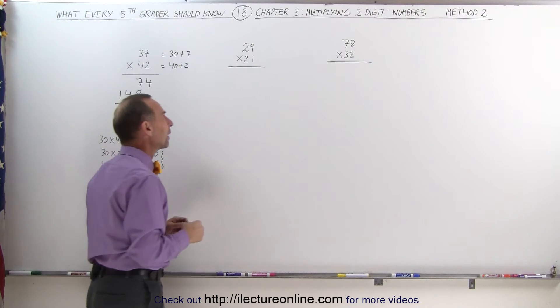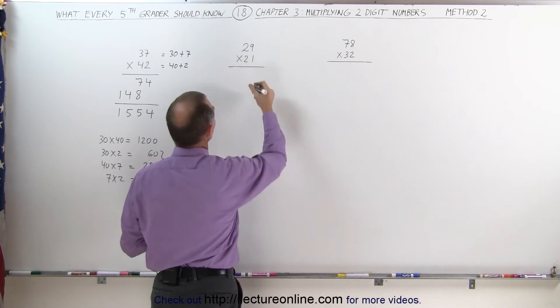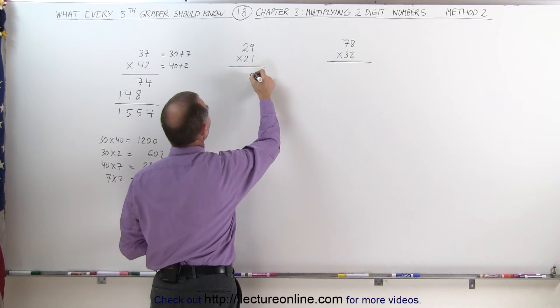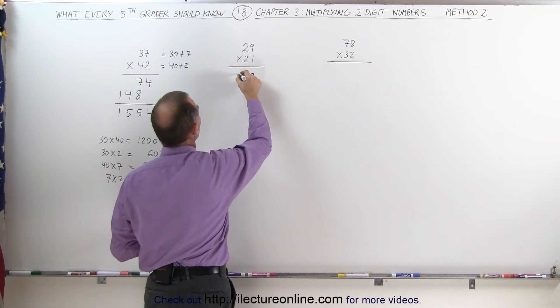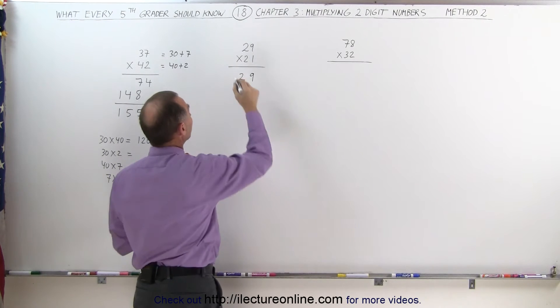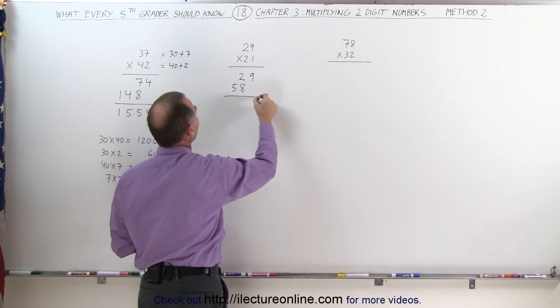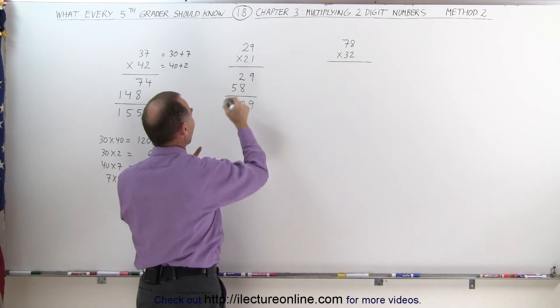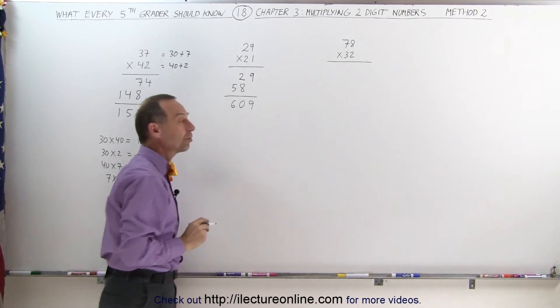Let's try it again on this example right here. Again, we first work it out longhand. 1 times 9 is 9, 1 times 2 is 2. 2 times 9 is 18, write down the 8, remember 1. 2 times 2 is 4 plus 1 is 5. 9, 2 plus 8 is 10, write down the 0, remember 1. 5 plus 1 is 6. That's the answer.